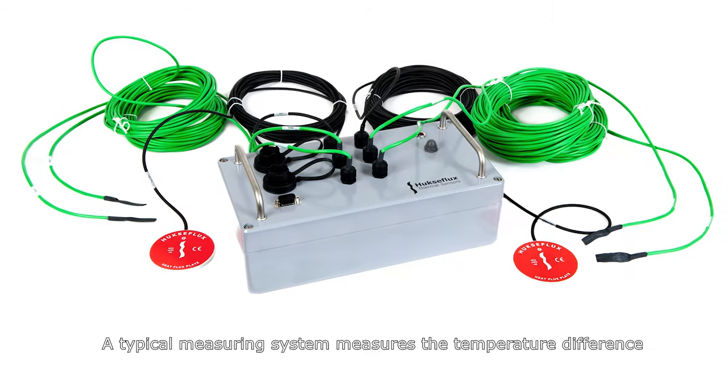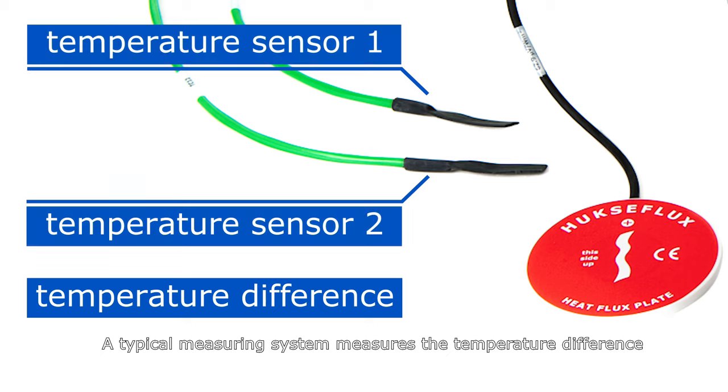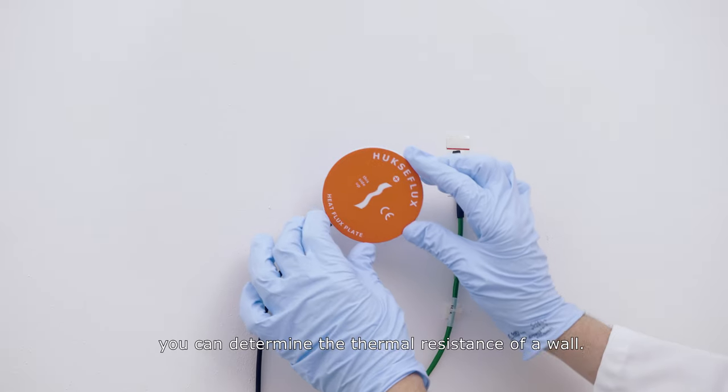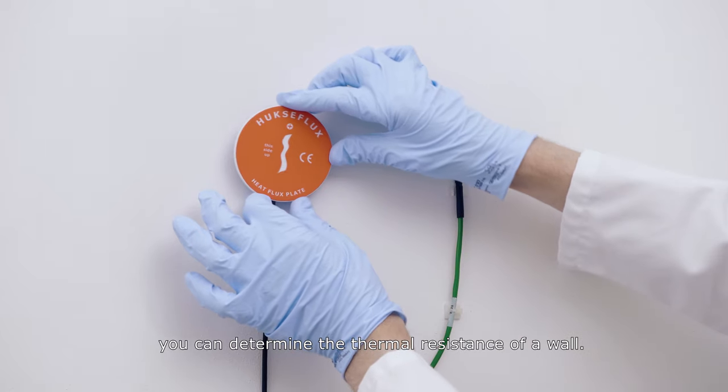A typical measuring system measures the temperature difference and the heat flux. By analyzing a few days of measurement data, you can determine the thermal resistance of a wall.